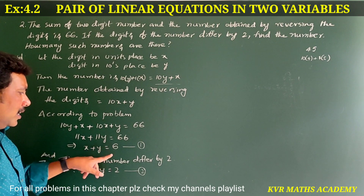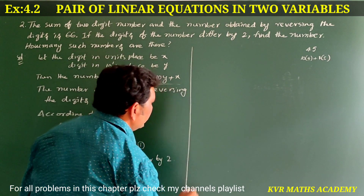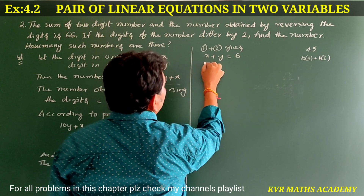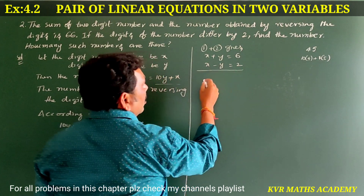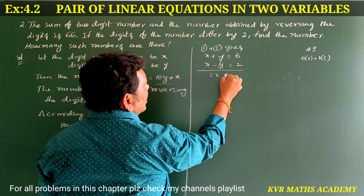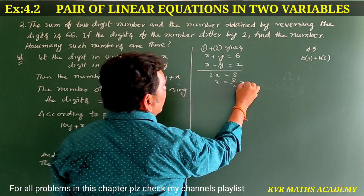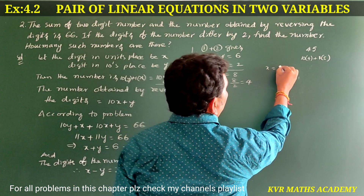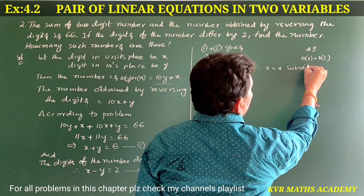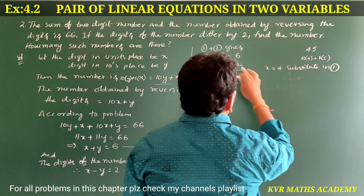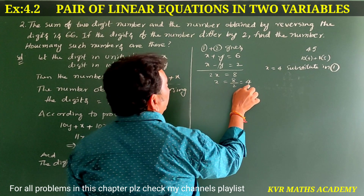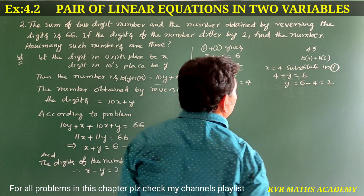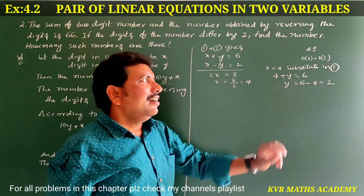Adding equations 1 and 2: x plus y equals 6, x minus y equals 2. The y terms cancel, giving 2x equals 8, so x equals 4. Substituting into equation 1: 4 plus y equals 6, so y equals 2. Therefore x equals 4 and y equals 2.